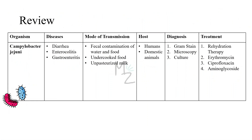Let's review everything quickly. The organism we discussed today is Campylobacter jejuni. It is responsible for causing diarrhea, enterocolitis, and gastroenteritis, with complications including bacteremia, Guillain-Barré syndrome, reactive arthritis, and Reiter's syndrome. Transmission is via the fecal-oral route — through consuming water or food contaminated with animal feces, undercooked food, or unpasteurized milk. Hosts are humans and domestic animals like cattle, chickens, and dogs. Diagnosis is based on gram staining, microscopy, and culture. Treatment includes rehydration therapy, erythromycin and ciprofloxacin for Campylobacter jejuni infections, and aminoglycosides.